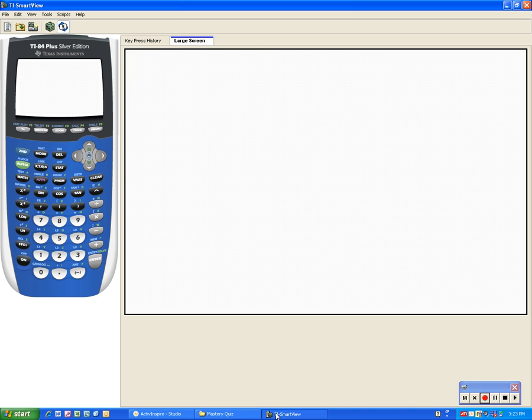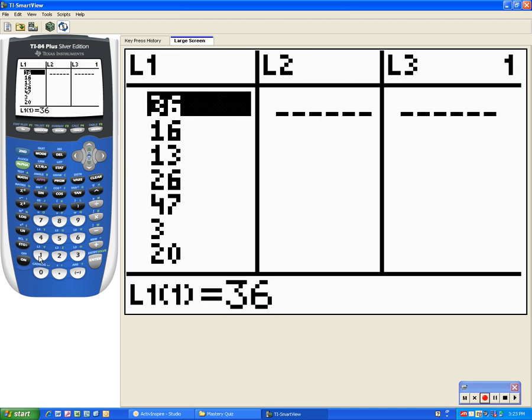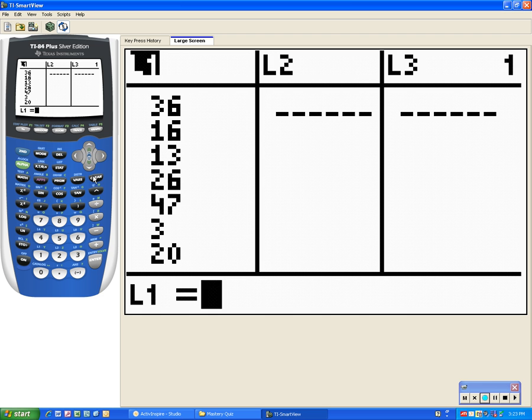So remember the steps. Hit your stat button, pick edit. Now if you have numbers in your list, go ahead and get rid of those. Go all the way to the top, hit clear, and then enter.